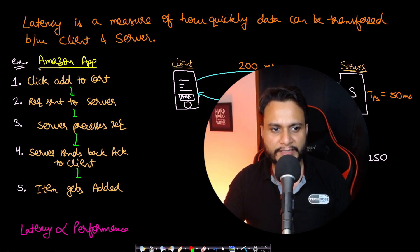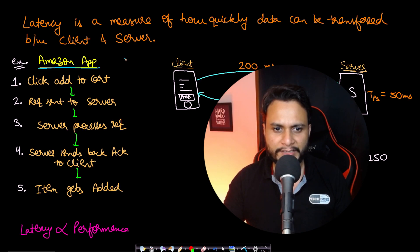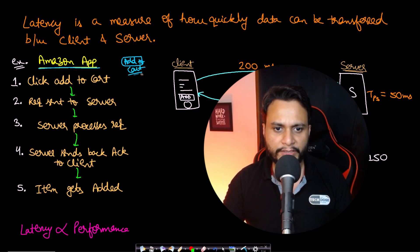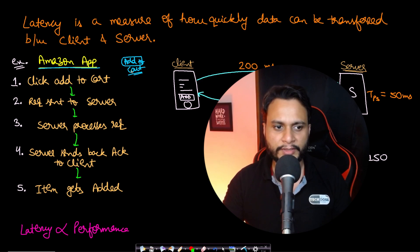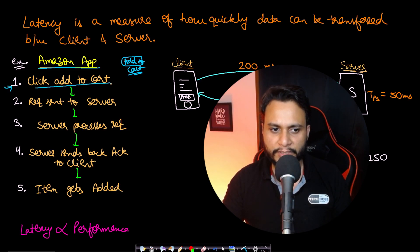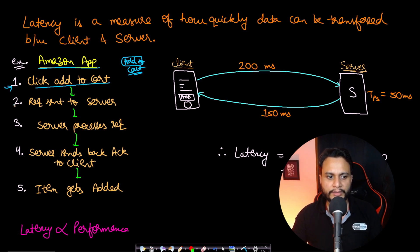To better understand this, let's take an example of the Amazon app. Let's say we are using the Amazon app and you see an item and want to add it to your cart. There will be a button which will add the item to your cart. The first thing you need to do is click the 'Add to Cart' button. When you click the button, the request is actually sent to the server.